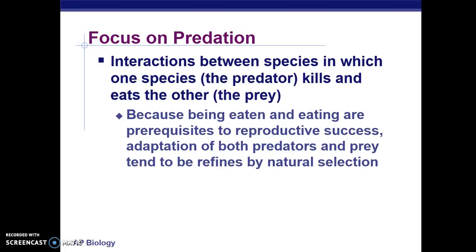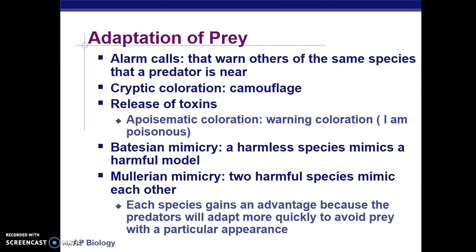Next, we're going to look at adaptations that prey evolve to escape the predator. Some examples: alarm calls. Some organisms, particularly certain types of squirrels, develop calls that they release when predators are in the environment to warn their family members that predators are near.